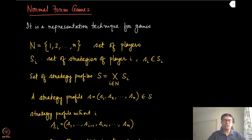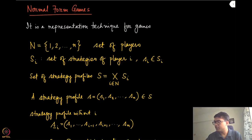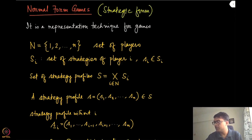Now that we know about games through certain examples — their players, actions, strategies, etc. — it's the right time to make things more formal and develop the notation and notions we will be using in the rest of this course. The first thing we are going to discuss is the normal form representation of games, sometimes also called strategic form games. These two terms are used interchangeably in game theory literature and books.